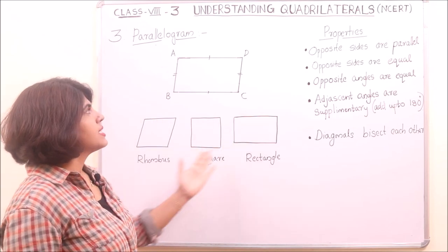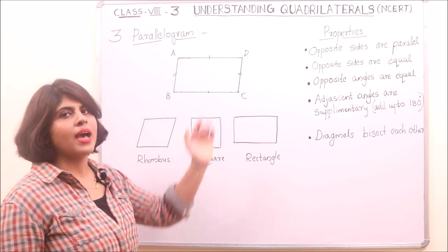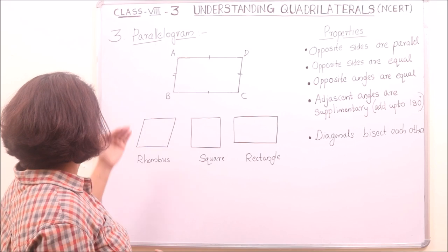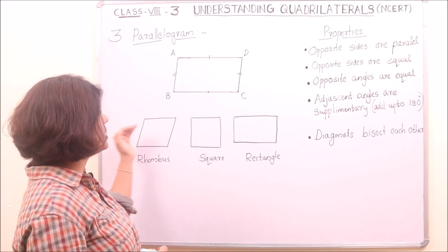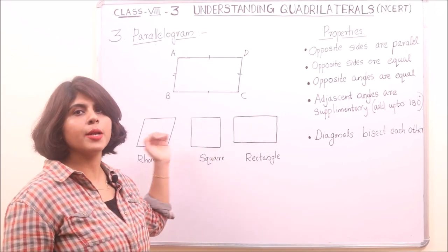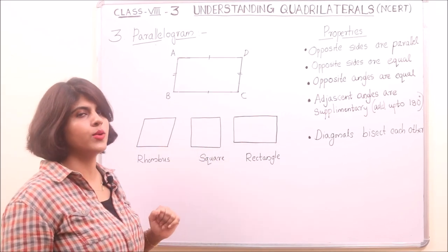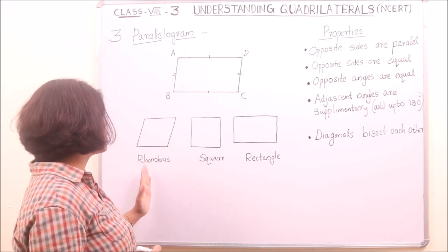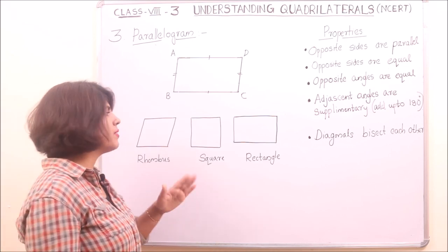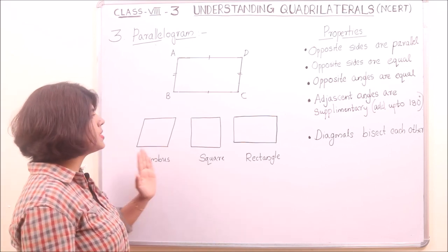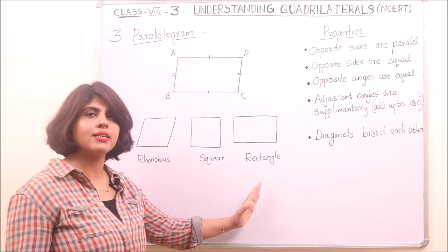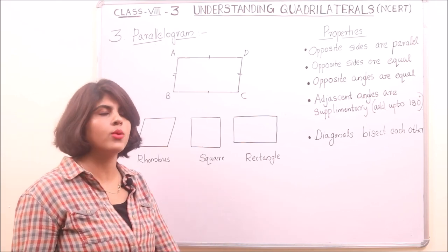These are the examples for parallelogram. These three are the special types of parallelogram — that is rhombus, square, and rectangle. We will discuss these special kinds of parallelogram later in detail.